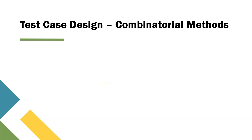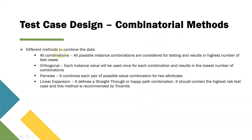Hey everyone, welcome to another lesson in this Tosca automation course. Today we are going to look at how Tosca provides us with different combination methods which can be triggered automatically. Till now we have been looking at how we can manually create our combinations in the test case design sheet, but Tosca also provides different automated methods. There are basically four types of methods through which Tosca combines the data you have created in your test case design sheet.